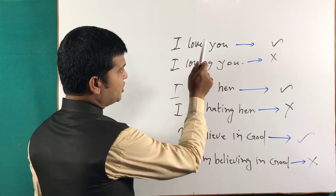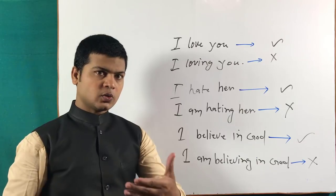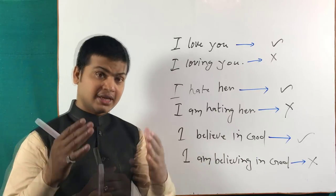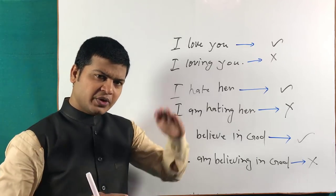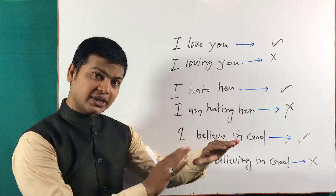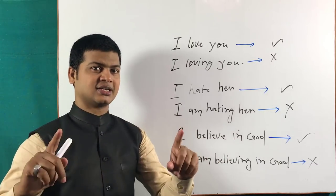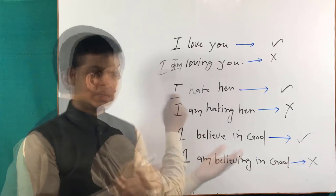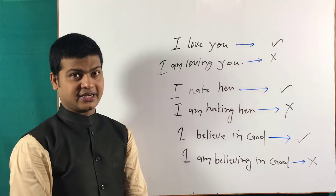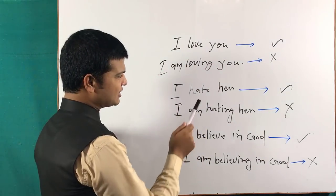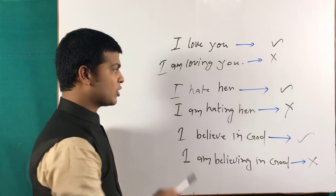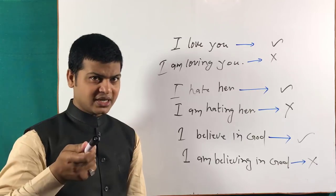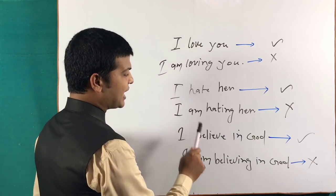'I love you' — friends, this is a correct sentence. Because 'love', 'hate', 'believe' — these are such words that you can't say 'I am loving you'; this is an incorrect sentence. You say 'I love you'. Similarly, we can't say 'I am hating you' or 'I am believing in God' because this is a permanent state. You should say 'I believe in God'.